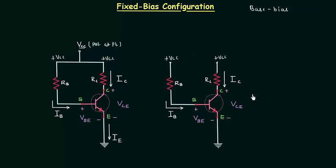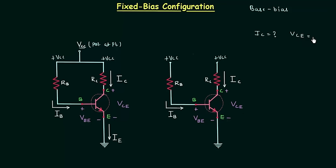Now we can easily analyze this circuit. We will try to obtain the output current Ic and the output voltage Vce.